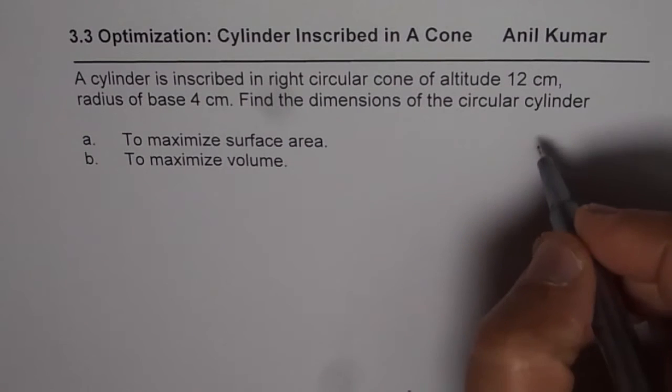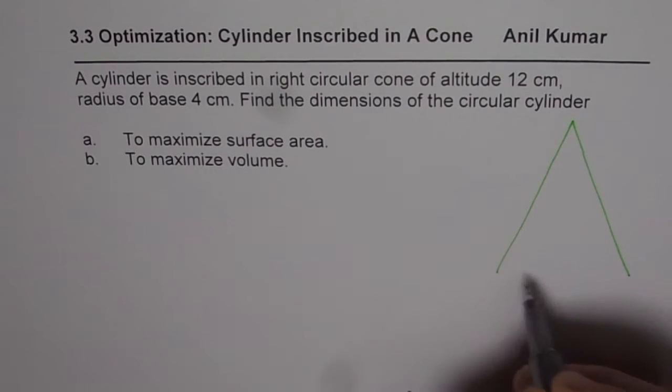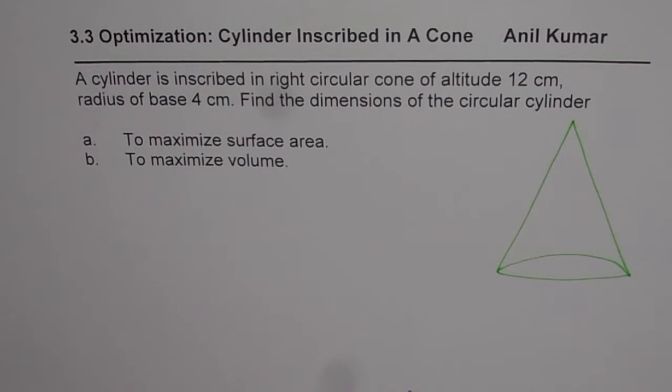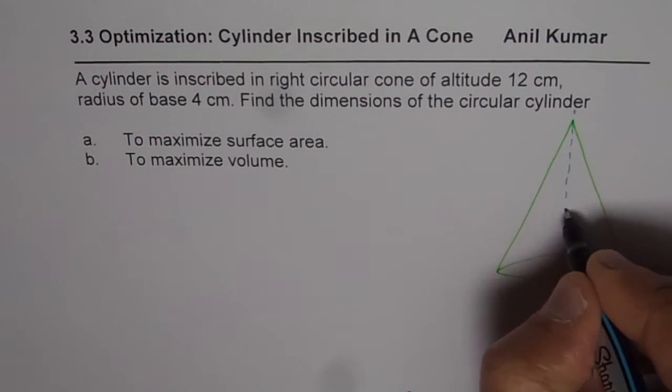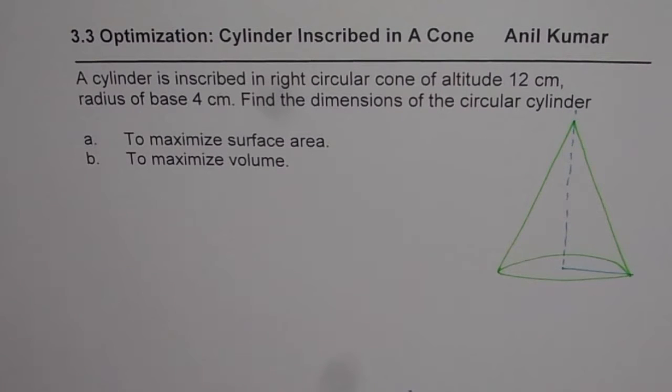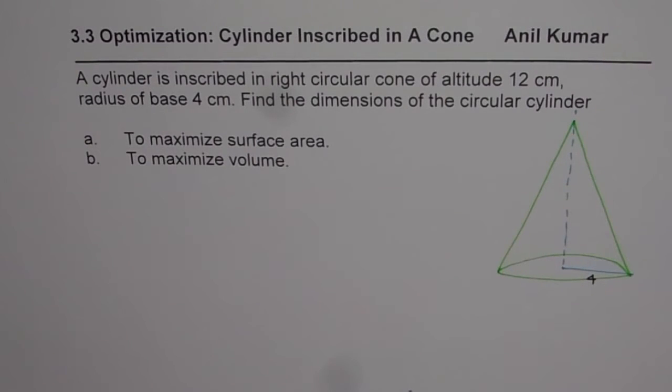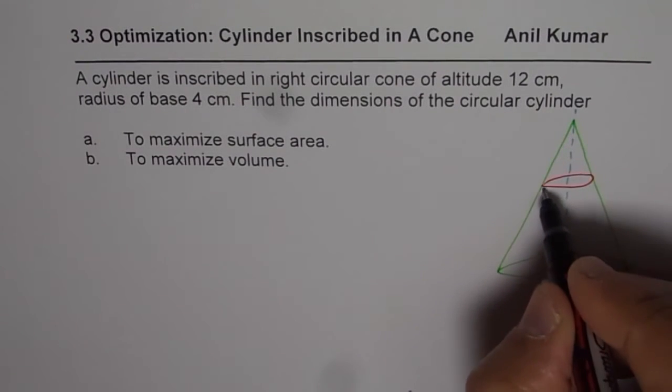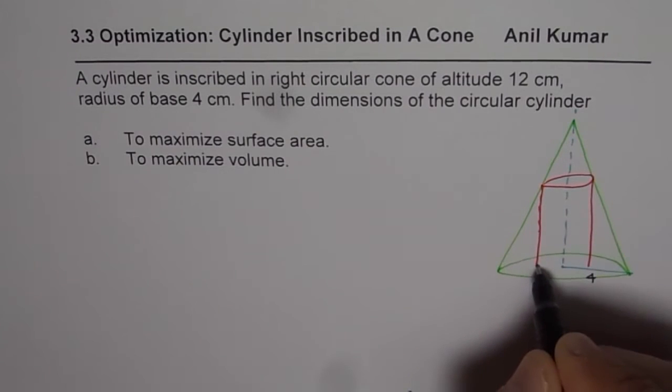So first step always is to sketch. So let us sketch a cone first, which is given to us with 12 cm as the altitude. Let us say this is the cone for us. I am using light colors and inside the cone we will make a cylinder. So let us say this is a cone for us.